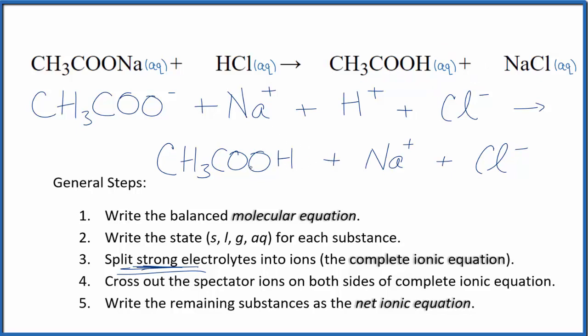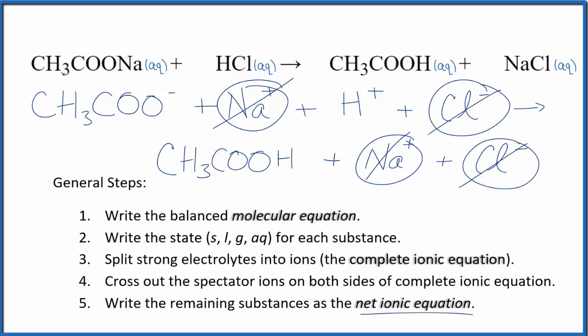We haven't written the states yet, but everything here is going to be aqueous. Now we can cross out spectator ions. They're on both sides of the complete ionic equation. In the reactants we have sodium and again in the products, cross that out. In the reactants we have the chloride ion and in the products again chloride ion, we cross that out. That leaves the net ionic equation for sodium acetate plus hydrochloric acid.